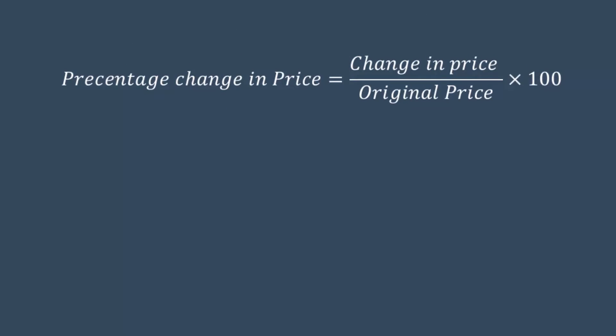First, take the percentage change in price. Change in price divided by original price into 100. 15 minus 10 divided by 10 into 100. 5 by 10 multiplied by 100 equal to 50%.